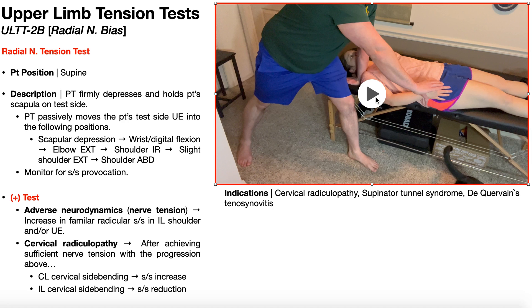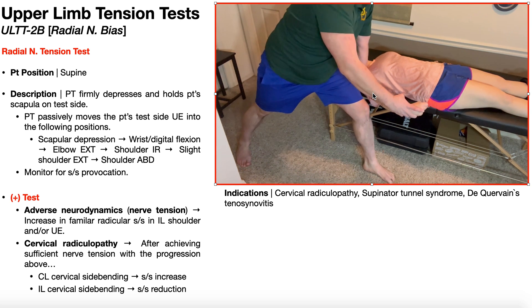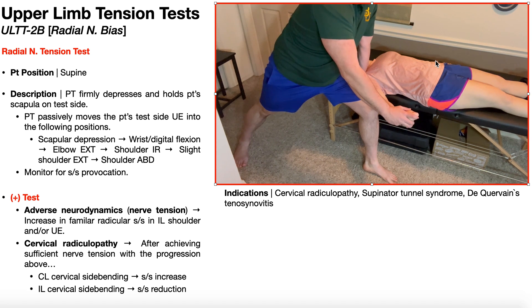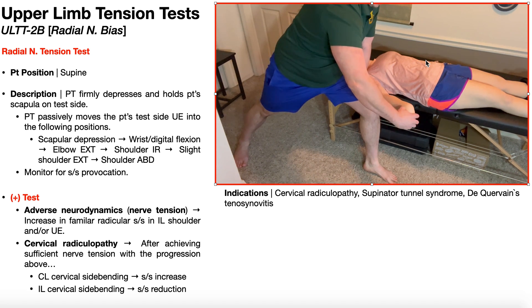From here, I'm going to passively move the patient's arm through the following progression of positions. I've already done scapular depression — I'm blocking it currently. So I'm going to move into wrist and digital flexion. I can essentially have the patient actively make a light fist. I'm going to have her make a fist, then bend it into flexion. I'm also going to ensure that her elbow stays extended — the elbow needs to be straight in the radial nerve tension test.